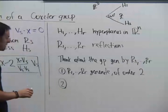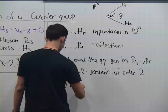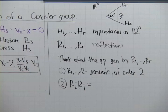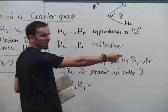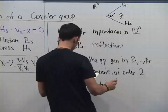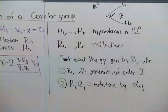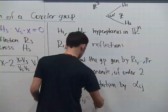Now let's think about RᵢRⱼ — what happens when you reflect across one hyperplane and then another? Many of you did this in your homework for the dihedral group and saw that composing two reflections gives a rotation. This is a nice exercise in linear algebra, and it's true not only in two dimensions but in any number of dimensions. When you compose — reflect across one hyperplane and across the other — you get a rotation by some angle, and that angle is related to the angle between the hyperplanes.